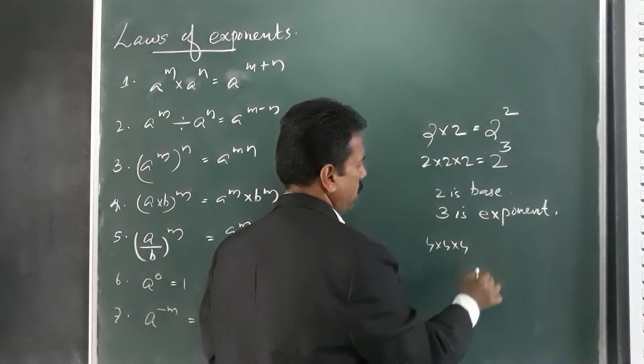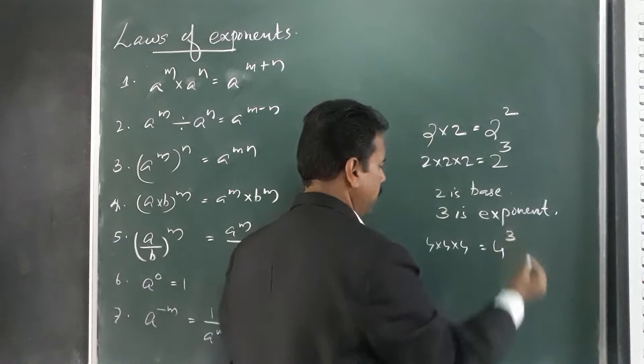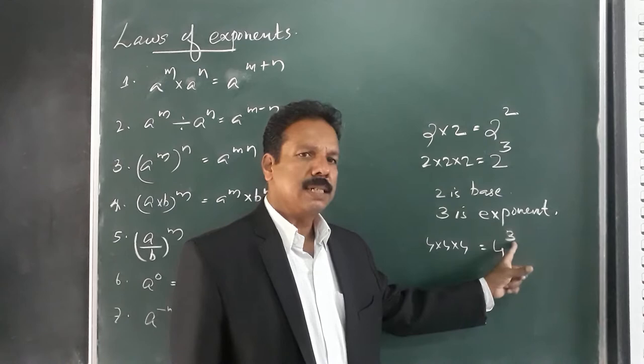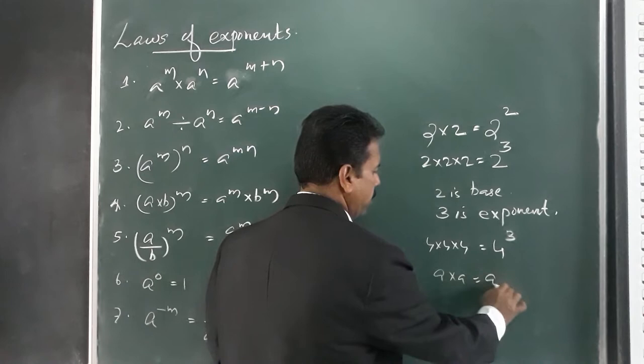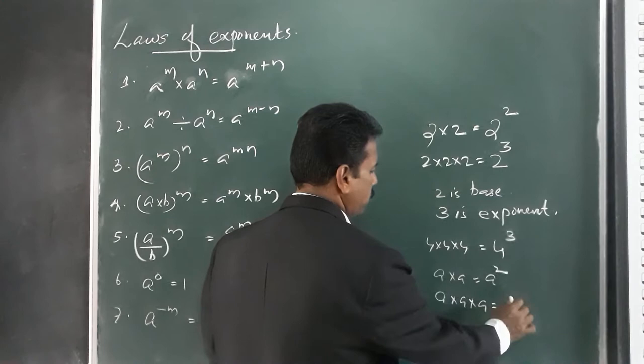Four into four into four — that is four raised to the power of three. Four is the base and three is the exponent. In the same manner, a into a is equal to a raised to the power of two; a into a into a is a raised to the power of three.